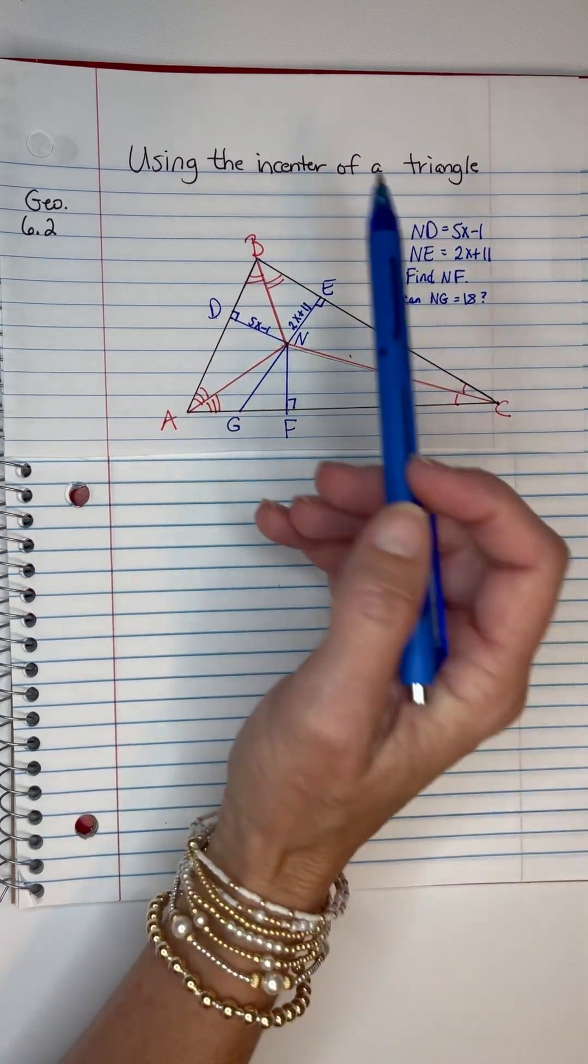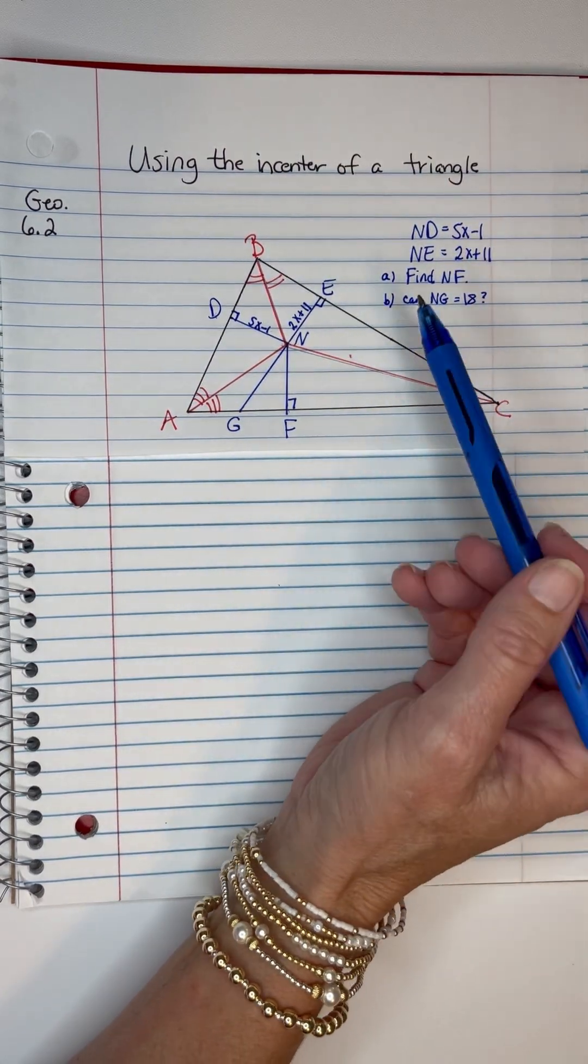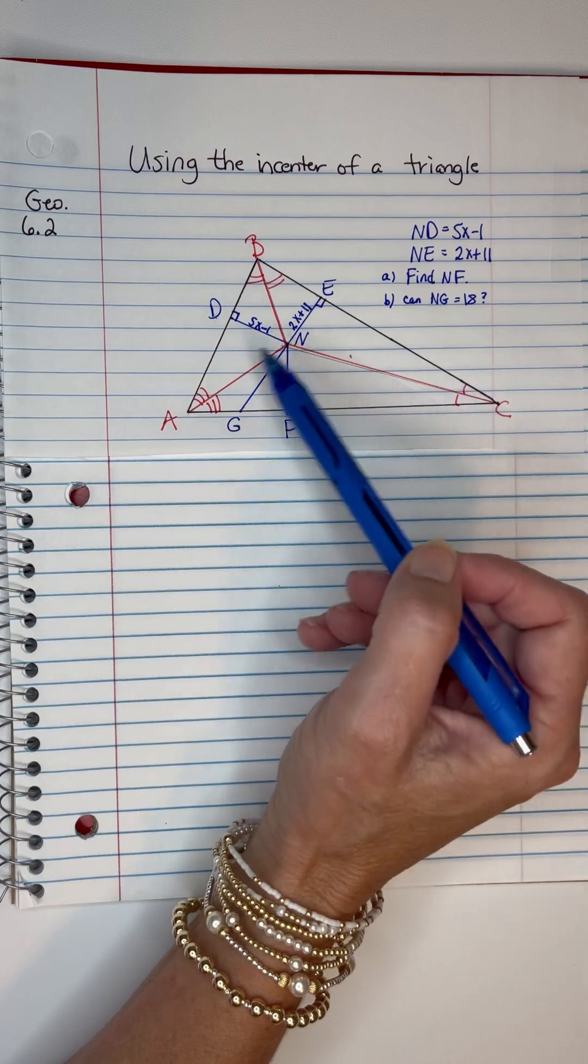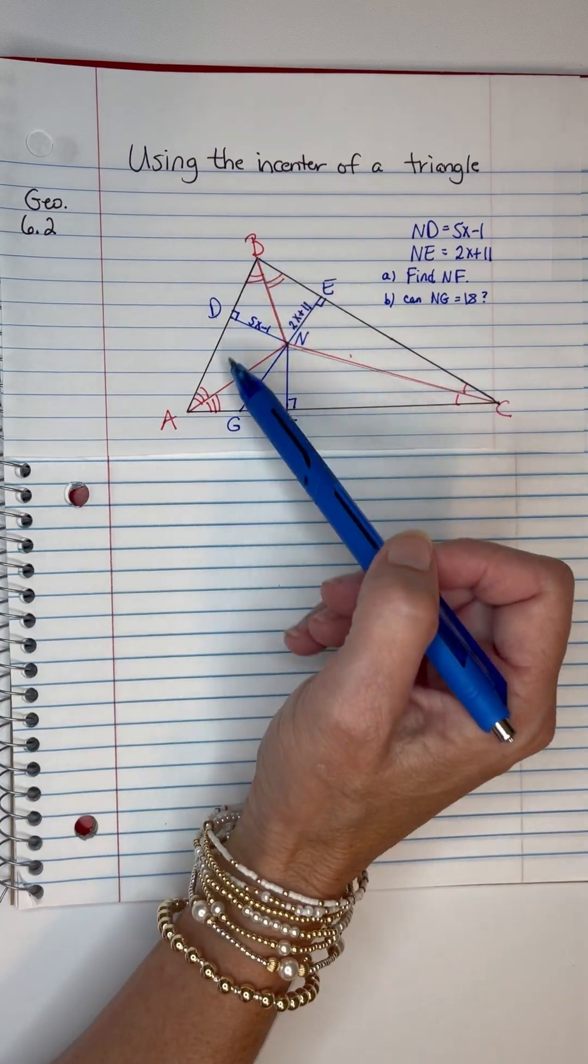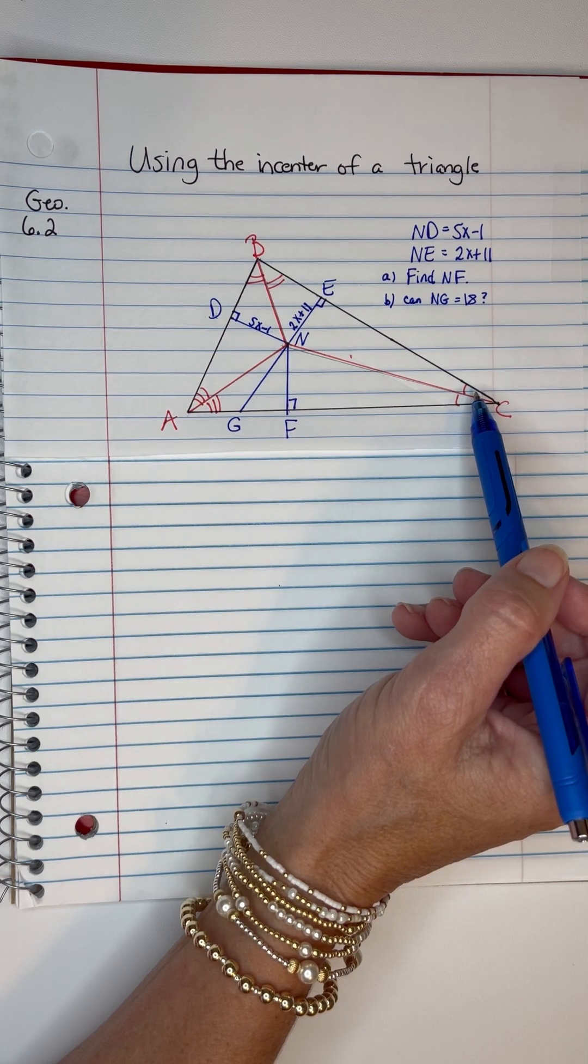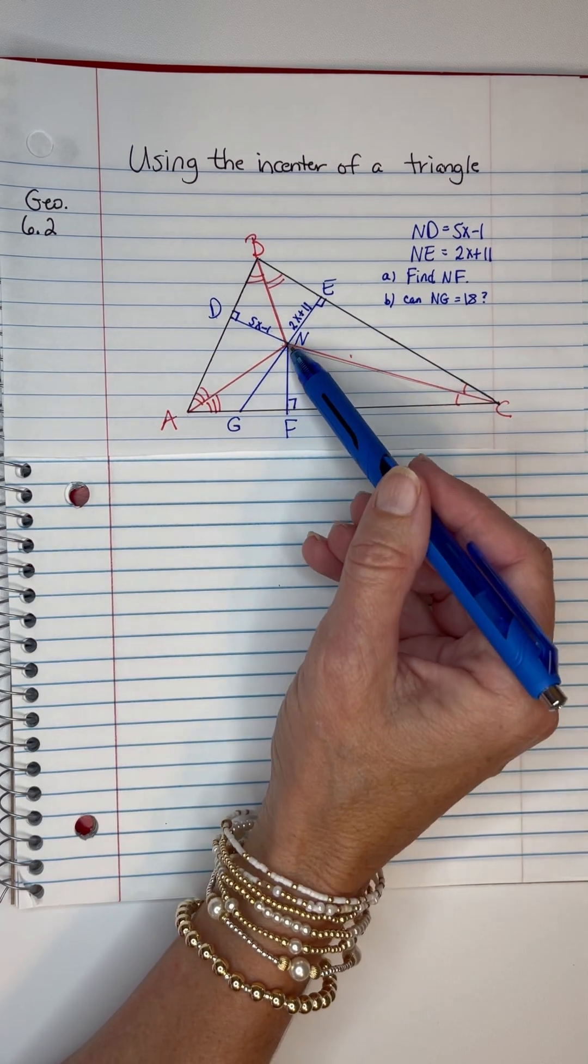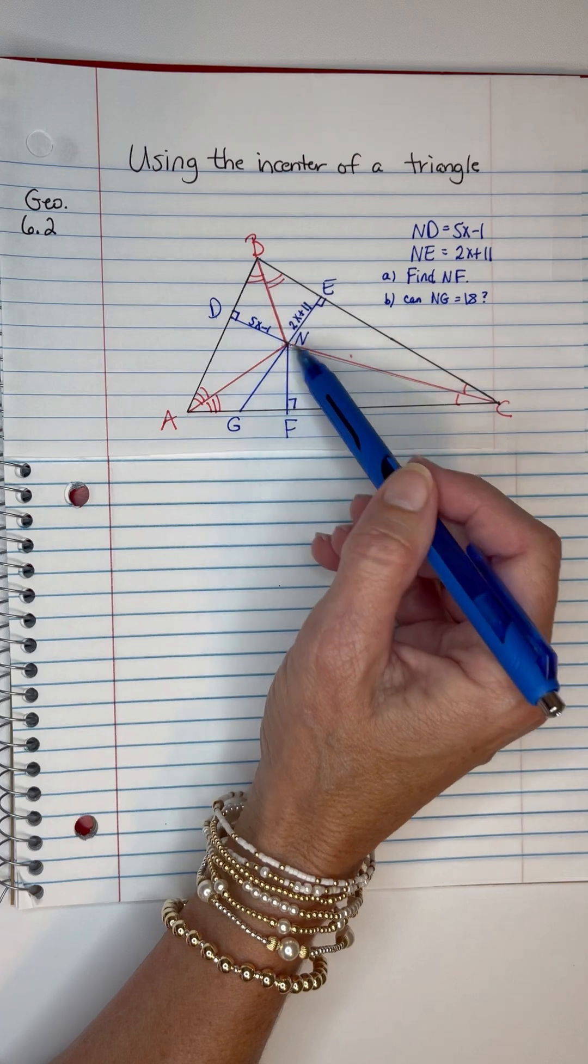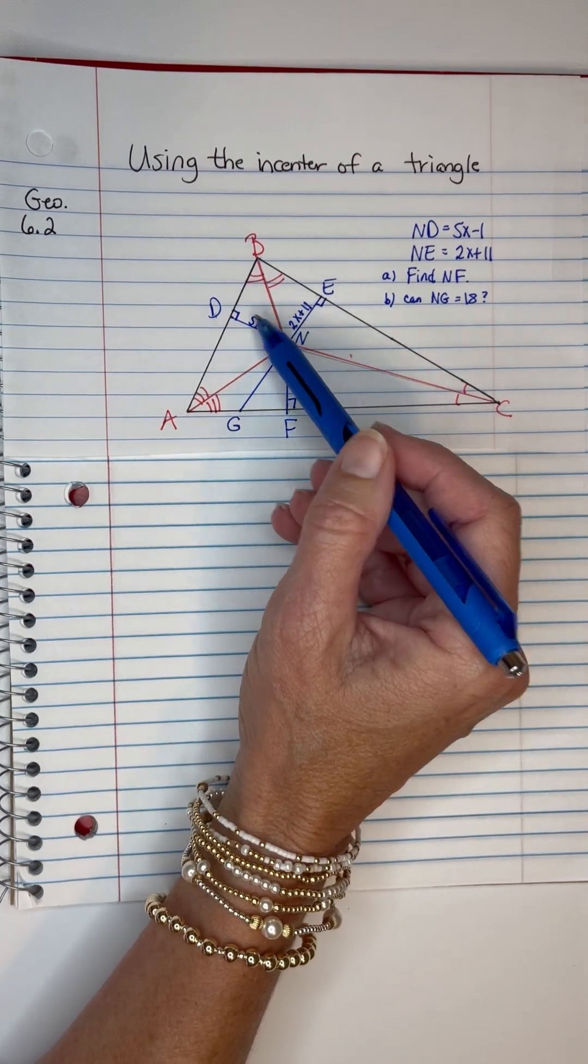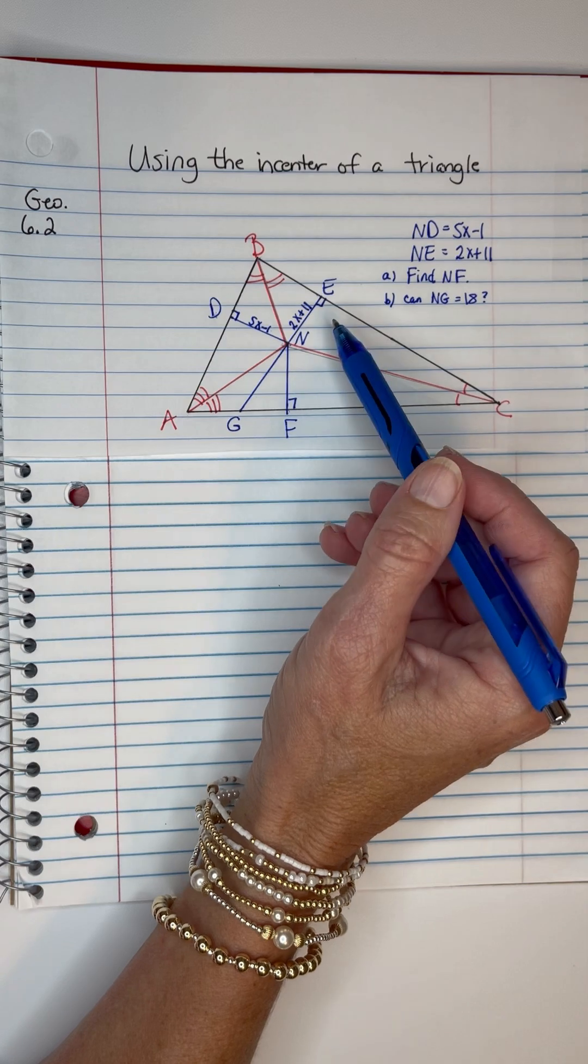Let's try this one again. We're going to use the incenter of a triangle. I have three angles that I have bisected with the red lines and just did them by eyesight so they're not perfect, but pretty close. And then the incenter theorem states that the incenter, which is the point of concurrency of these angle bisectors, is going to be equal distance to the sides of the triangle.